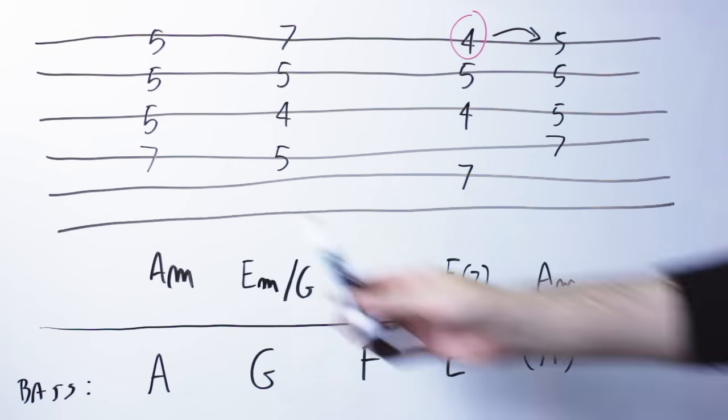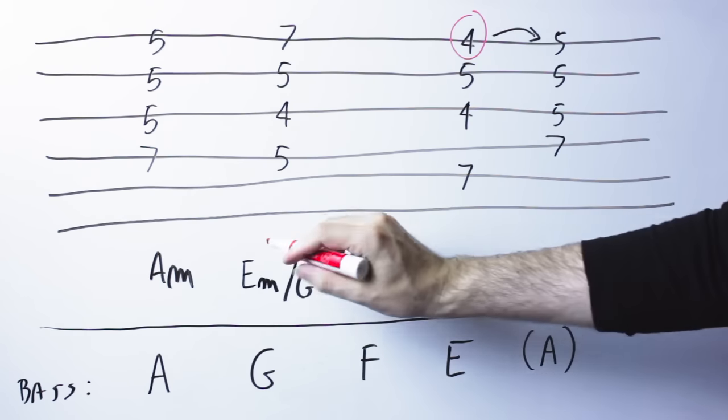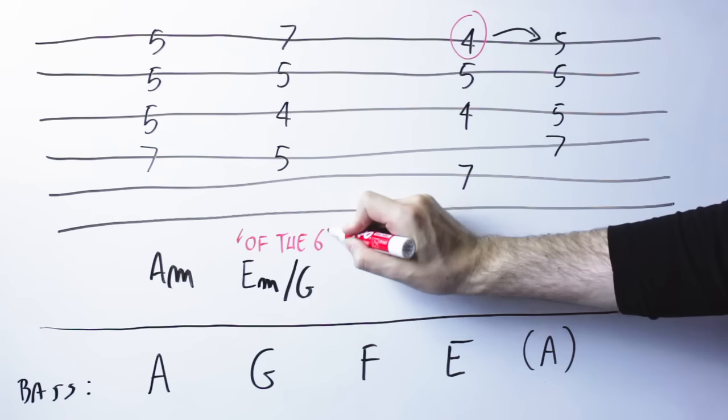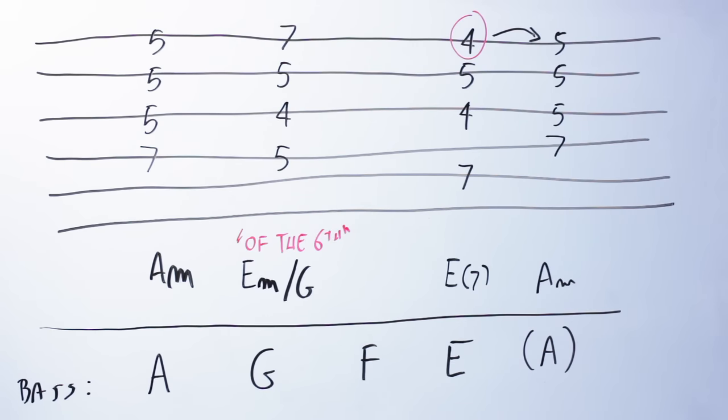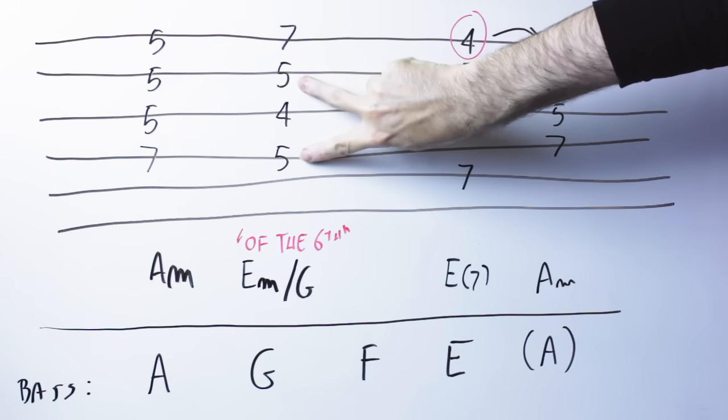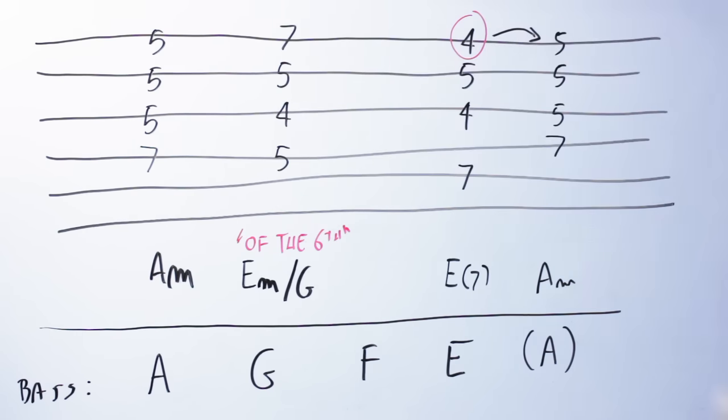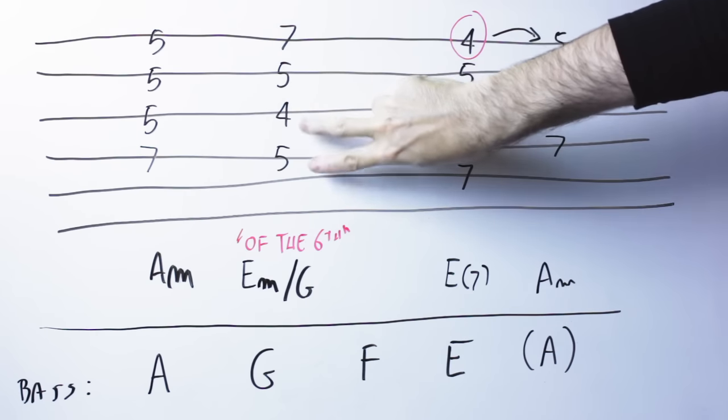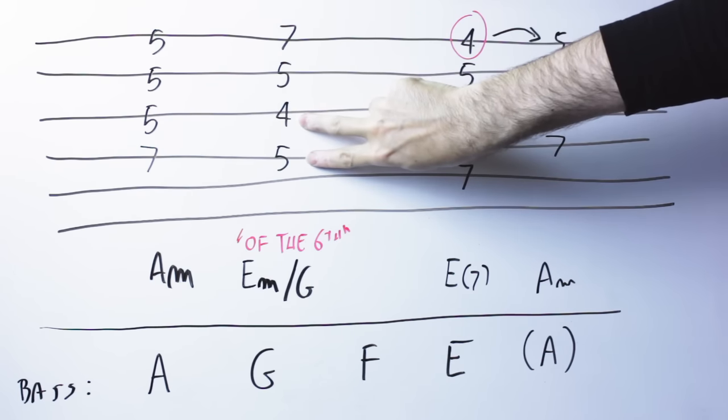Now, of course, they wouldn't call this a first inversion chord. They would call it a chord of the sixth, because there would be an interval of a sixth between this G note and the E note. Now, you might guess why they don't call this a chord of the sixth three, because there's an interval of a sixth, sure, but there's also an interval of a third between the G and the B note.